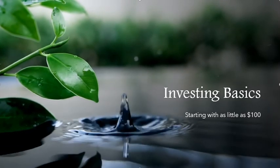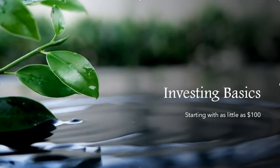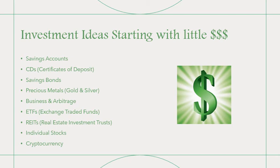We're going to discuss some investing basics for people starting out with as little as $100. We'll discuss a number of potential investment options — this is not an exhaustive list, but these are most of the basics available for people starting out with just a small amount of money. In order from least risk to most risk, we'll discuss savings accounts, certificates of deposit, savings bonds, investing in precious metals, investing in your own business or conducting arbitrage, exchange traded funds, real estate investment trusts, investing in individual stocks, and we'll touch on cryptocurrency.